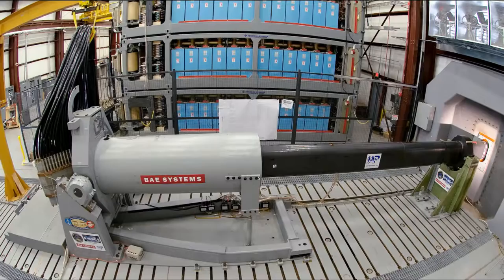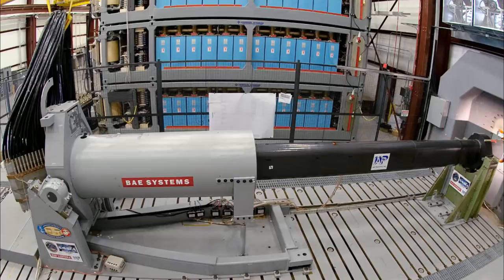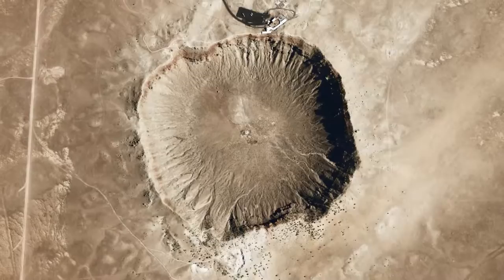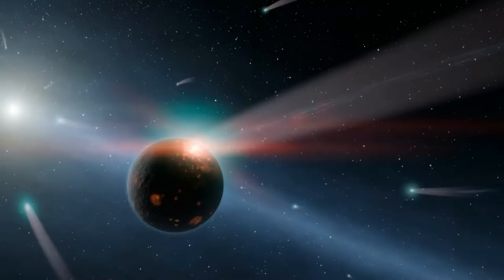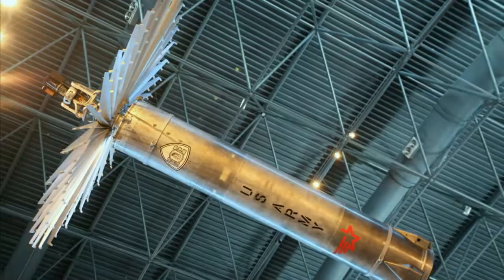Modern day examples include railguns and coilguns which are forms of mass drivers. Using these weapons to bombard a planet has many advantages. Kinetic bombardment means you can deliver projectiles from a very high angle and very high speed making it extremely difficult to defend against. Also these projectiles would not require explosive warheads and are pretty much just big lumps of metal.